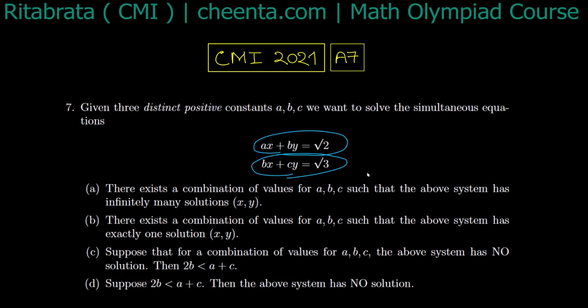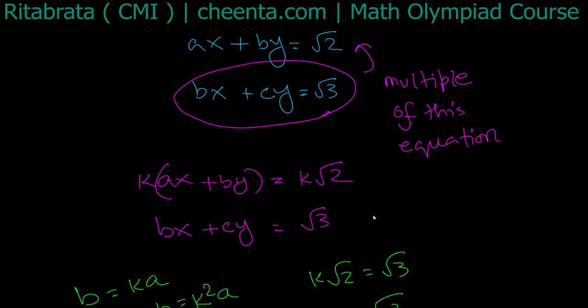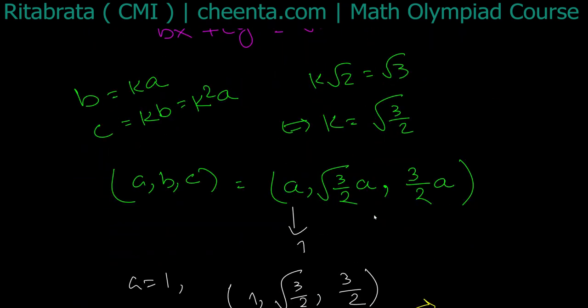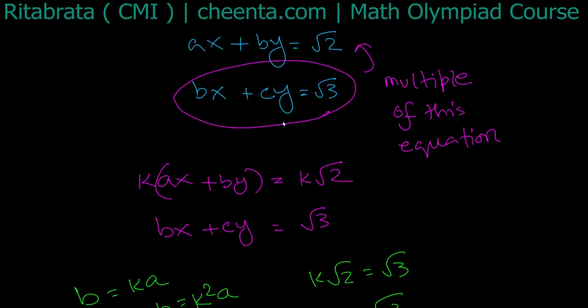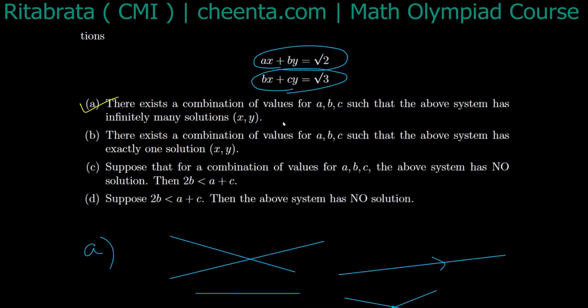So there exists a combination of values of a, b, c — in fact infinitely many such combinations — for which the system has infinitely many solutions. This is possible by varying a over any positive real number.